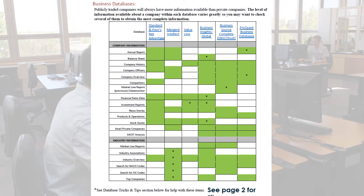Here is a copy of the chart. The first page has a grid that CU librarians put together to indicate what information can be found in each of the six primary business databases. Some of these are limited to publicly traded companies. I'm looking for the investments report in Value Line. You'll notice that there is an asterisk in the box, which means that finding the resource may not be obvious, and the next page of the guide provides some help in navigating the databases to find it.